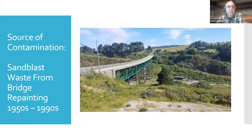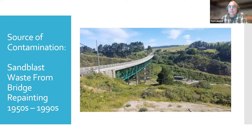The source of contamination is sandblast waste from bridge repainting processes that occurred from the 1950s through the 1990s. The metal was sandblasted, and the chips — which included lead and zinc — would fall to the ground. Since 1999, Caltrans has enclosed the bridge and collected all the sandblast waste. Prevailing winds moved from west to east, which explains the distribution of contamination east of the bridge.